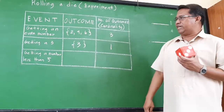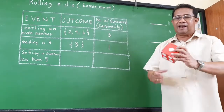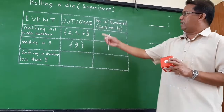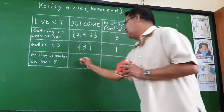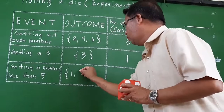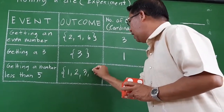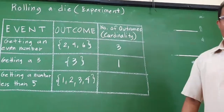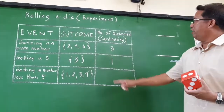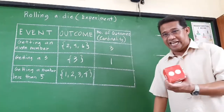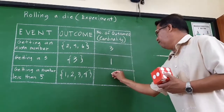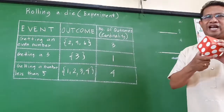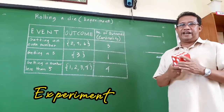What are the outcomes in getting a number less than 5? The possible outcomes will be 1, 2, 3, and 4. These are the numbers less than 5 in this die. So the number of outcomes, or the cardinality, is 4. In rolling a die, this is called an experiment.